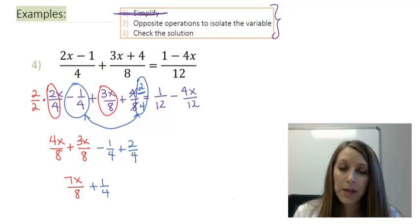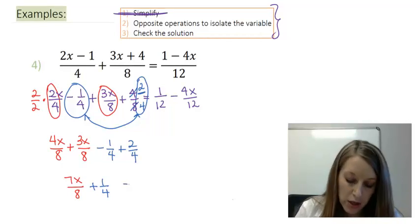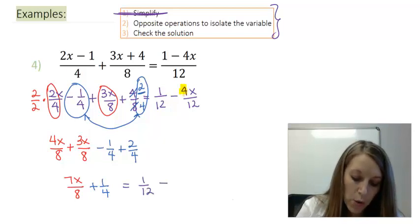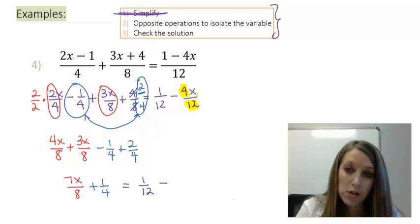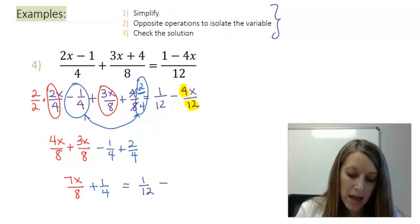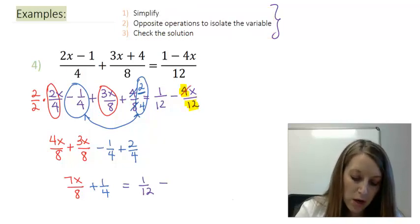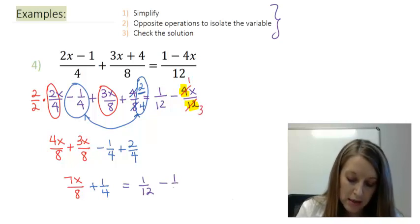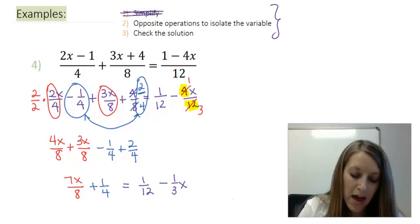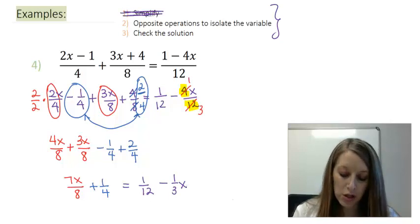I just want to copy down the right-hand side of my equation here. So I have a 1 over 12 minus, and with this 4 over 12, I can reduce. So in simplifying it, I can divide each of those by 4, leaving me with a 1 third x here. And I have simplified both sides of my equation completely.